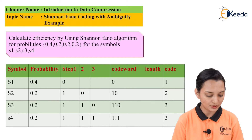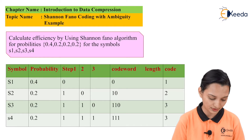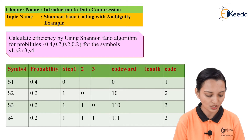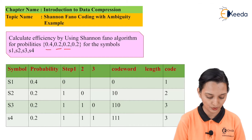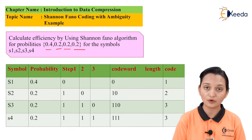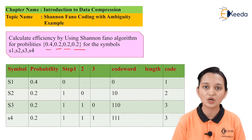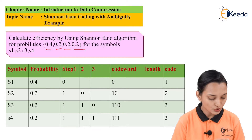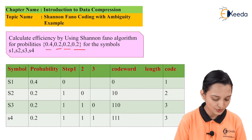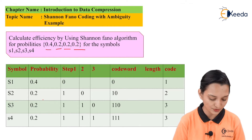Here you can observe that the example has four symbols with probabilities. Calculate the efficiency using the Shannon-Fano algorithm for probabilities 0.4, 0.2, 0.2, 0.2 for symbols S1, S2, S3, S4. Fortunately, the given probabilities are already in descending order, so no need to rearrange them. Directly write down the symbols and their respective probabilities: 0.4, 0.2, 0.2, 0.2.